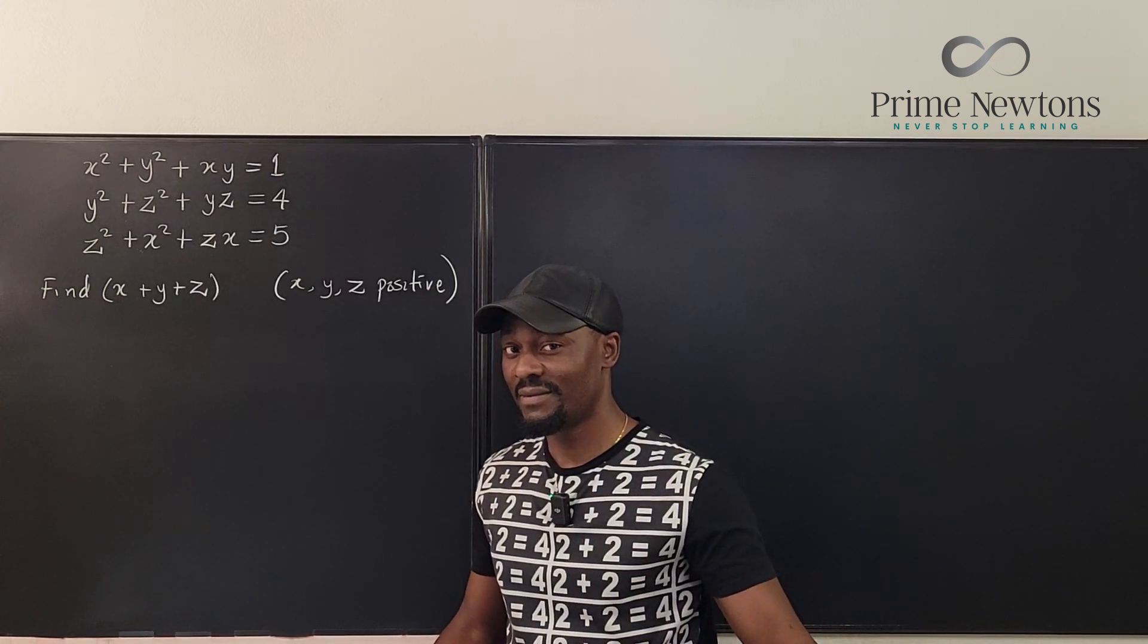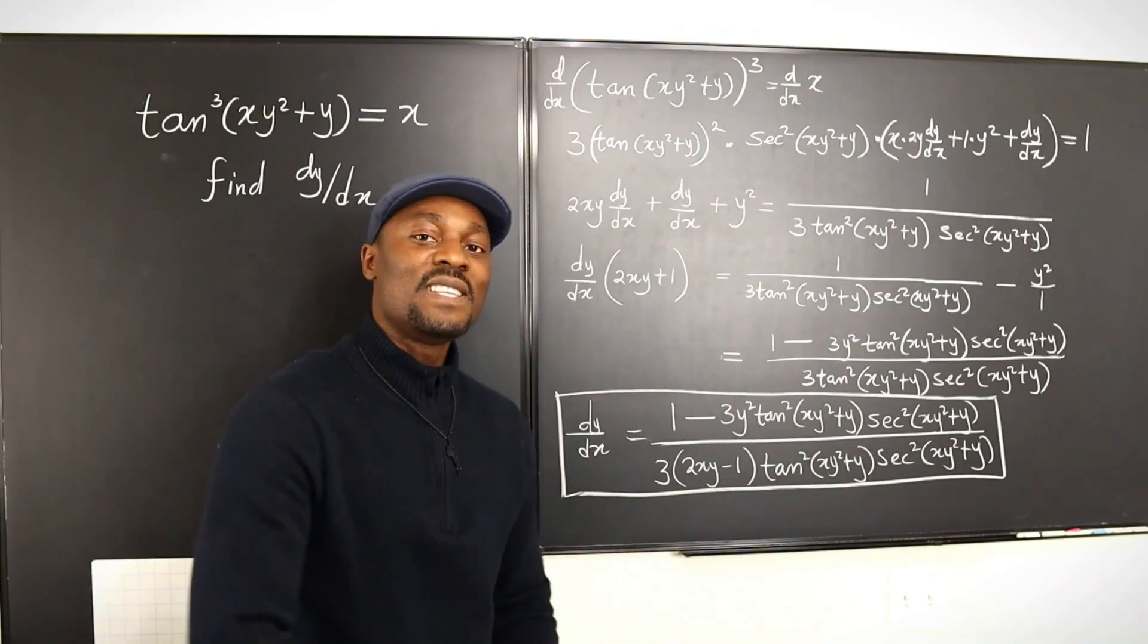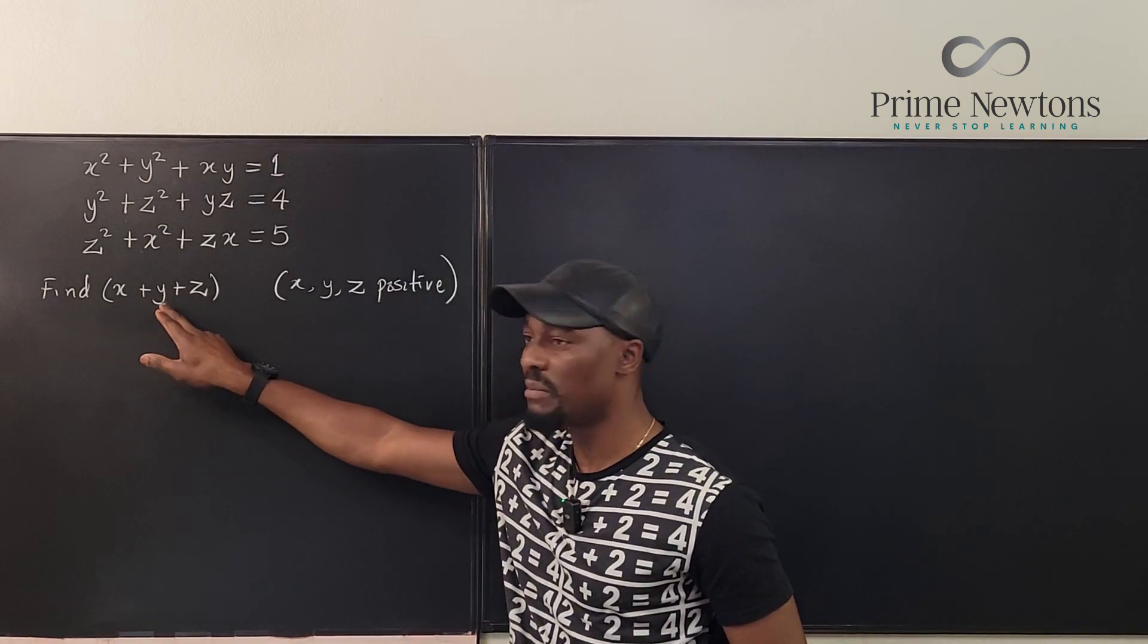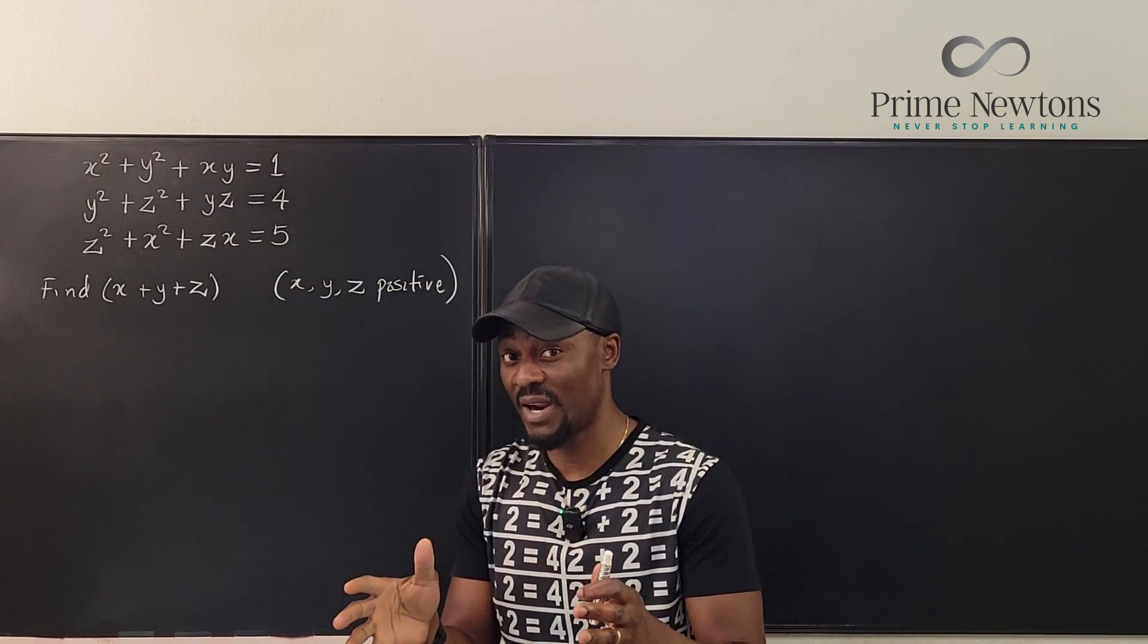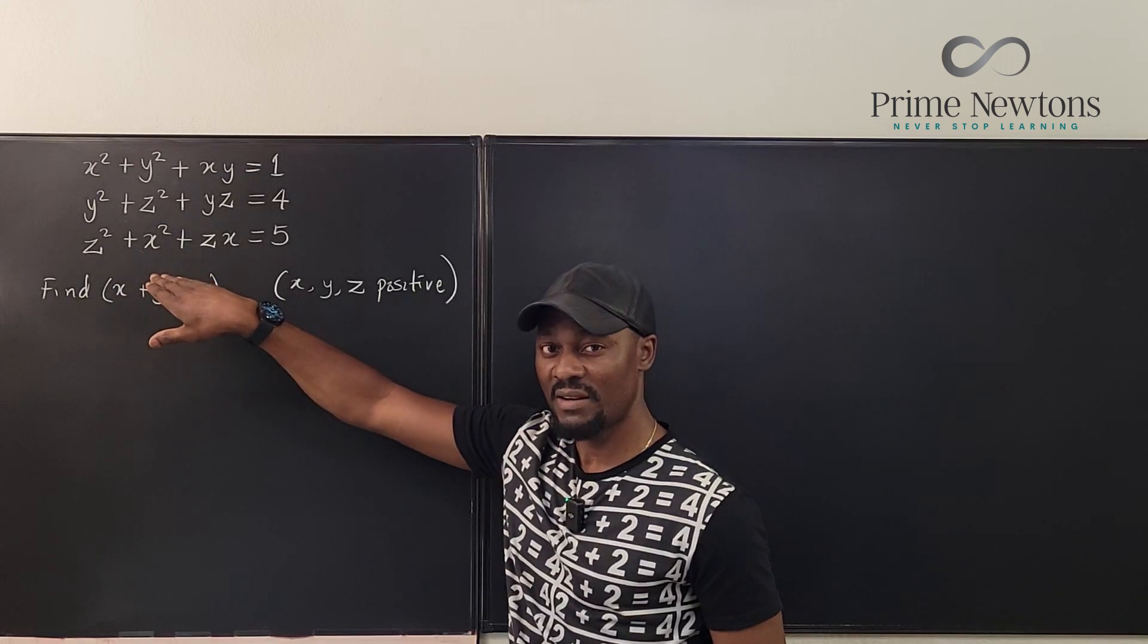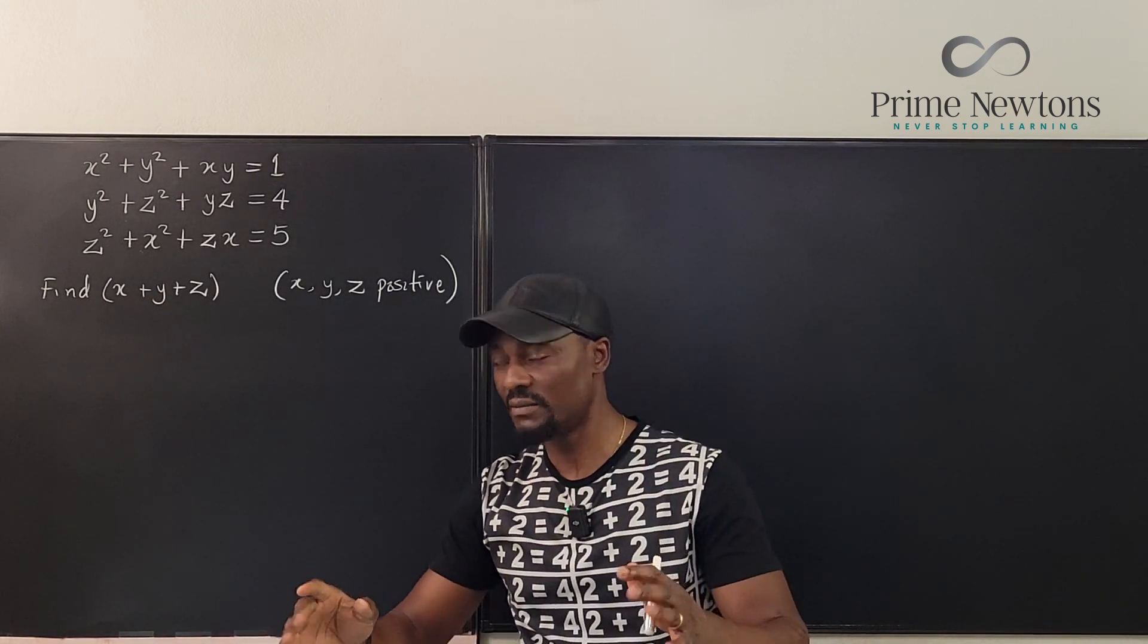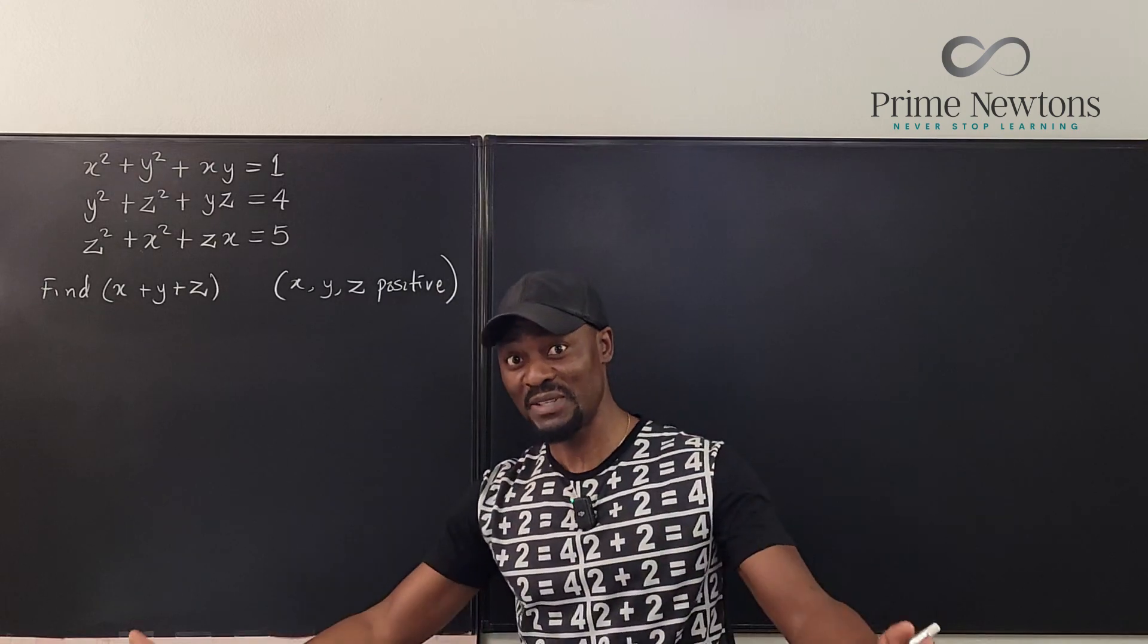Let's get into the video. As soon as I saw this problem, my mind told me I'm gonna need a fact because the question says we're looking for X plus Y plus Z, we're not looking for each of them. So I knew I would not be solving for X or Y or Z individually. I'm gonna be solving for the bunch. I knew this fact that if I square this, I'm gonna get something similar. And I also noticed that if I add the equations, I am still gonna get something similar to what I would get when I square this.